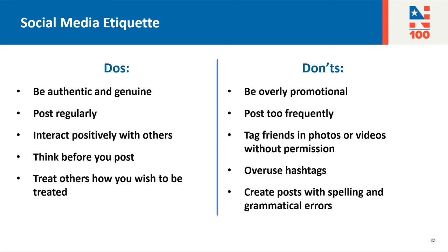Just like all forms of communication, social media is governed by an unspoken set of rules that other users expect each other to follow. While each platform does have its own specific considerations, today we're going to go over a universal list of social media do's and don'ts. You'll want to start off by being authentic and genuine, both in your profile and in your posts. Post regularly — consistent posting is the quickest way to build a following and the easiest way to increase engagement. Interact positively with others, and think before you post. If you wouldn't say something out loud or to someone in person, you probably shouldn't say it on social media either. Treat others how you wish to be treated — this will ensure that everyone has the best experience they can on social media.